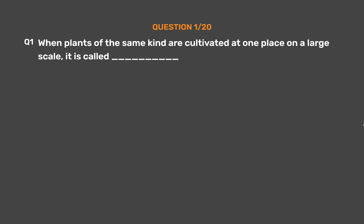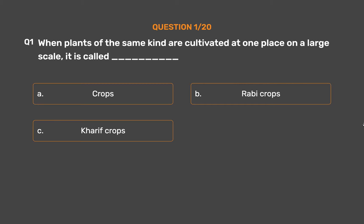Question No. 1: When plants of the same kind are cultivated at one place on a large scale, it is called ___. Option A: Crops. Option B: Rabi crops. Option C: Kharif crops. Option D: None of these.